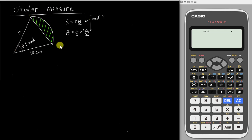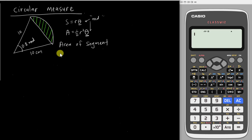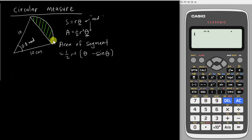If you have a question like this and they ask you to find the area of the shaded region — the green colored parts — there is a formula for it. This area of shaded region is called a segment. We have a formula for segment: ½r²(θ − sinθ). I love this formula because it can find the shaded region very fast.